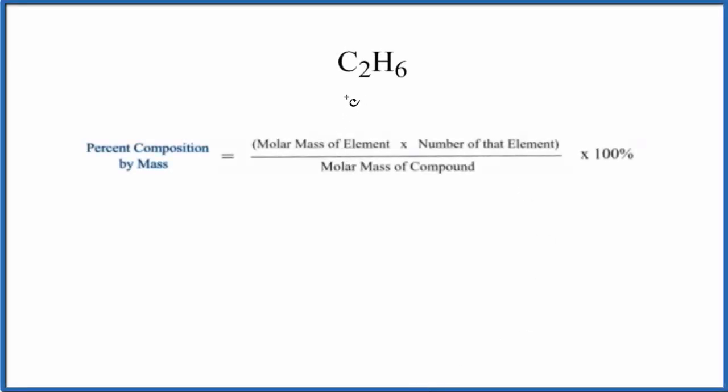In this video, we'll find the percent composition by mass for each element in C2H6, which is ethane. So the first thing we do, we have this formula here, and this is going to help us out to find the percent composition by mass.